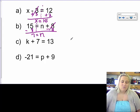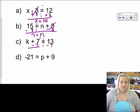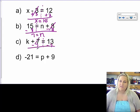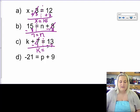I want you to pause the video at this point and try c and d on your own paper, please. On c, we're trying to get k by itself. 7 is being added to k. So the opposite of adding would be subtracting. So I'm going to subtract 7. What I do to one side of the equal sign, I must do to the other side of the equal sign. So those will cancel out. I have k equals 13 minus 7 is 6. Final answer.